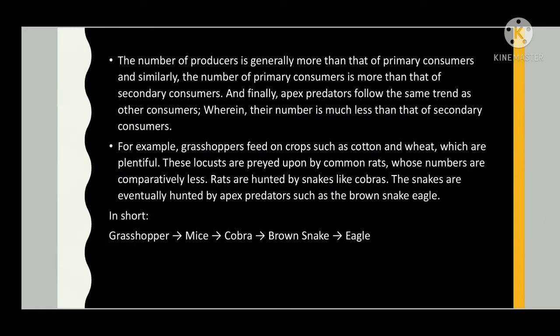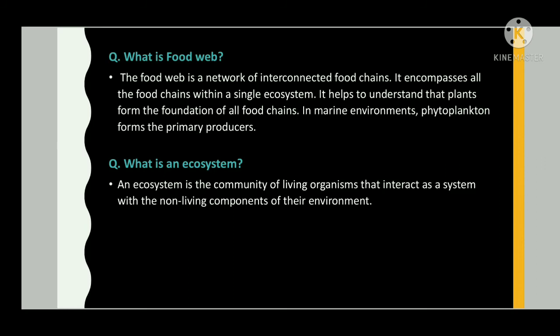The number of producers is generally more than that of primary consumers; similarly, primary consumers outnumber secondary consumers; and apex predators have much fewer numbers than secondary consumers. For example, grasshoppers feed on crops such as cotton and wheat, which are plentiful. These insects are preyed upon by rats, whose numbers are comparatively less. Rats are hunted by snakes like cobras, which are eventually hunted by apex predators such as the brown snake eagle. In short: grasshopper → mice → cobra → brown snake eagle.